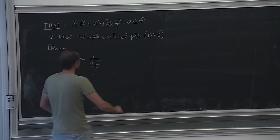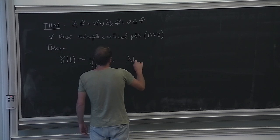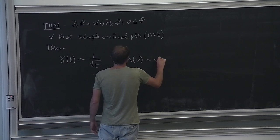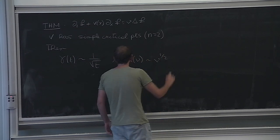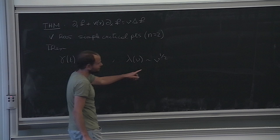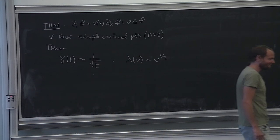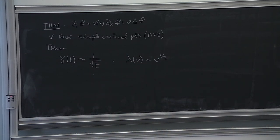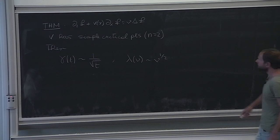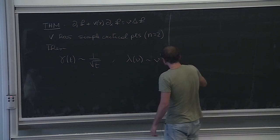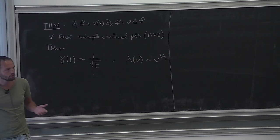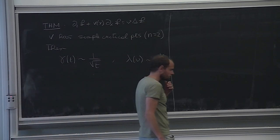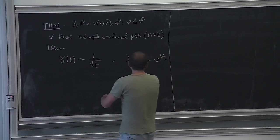And we know the enhanced dissipation rate, which is something like t to the 1/2. So that was n over n+2, and 1 over t to the 1 over n. As I mentioned last time, there are a few proofs of this result by hypocoercivity, which is what I'm going to tell you today.